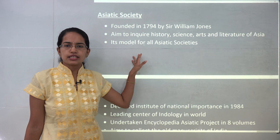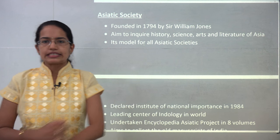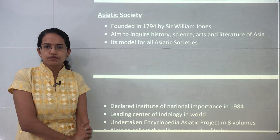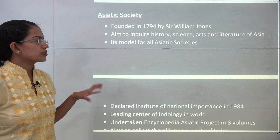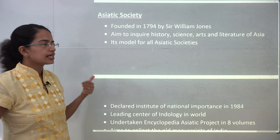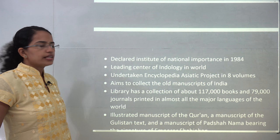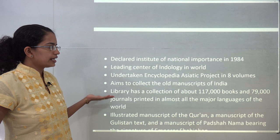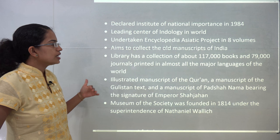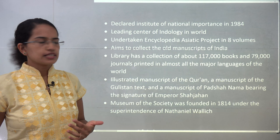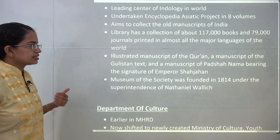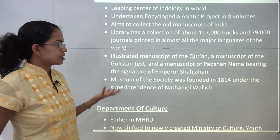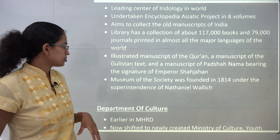The Asiatic Society was established by Sir William Jones in 1784. Its idea was to inquire into the history, science, and arts of Asia. It is one of the leading centers of Indology in the world, working on the Encyclopedia Asiatica project in eight volumes. It has a library with more than one lakh books and 80,000 journals, and holds illustrated manuscripts of the Quran, Gulistan, and Padshahnama texts bearing the signatures of Emperor Shah Jahan.